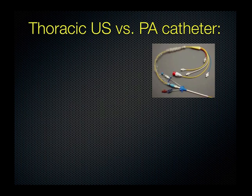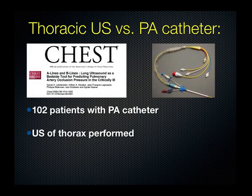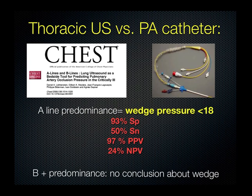To mention the utility of PA catheters compared to ultrasound: a CHEST article recently looked at A lines and B lines to see what they could tell us about pulmonary capillary wedge pressure. There were 102 patients with a PA catheter, all of whom had thoracic ultrasound performed. The findings were that A line predominance always corresponded to a wedge pressure less than 18. B line predominance did not allow a conclusion about the wedge, because cardiogenic and non-cardiogenic pulmonary edema can often appear similar.